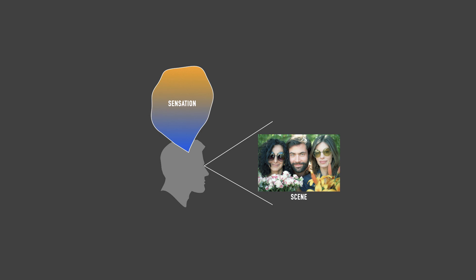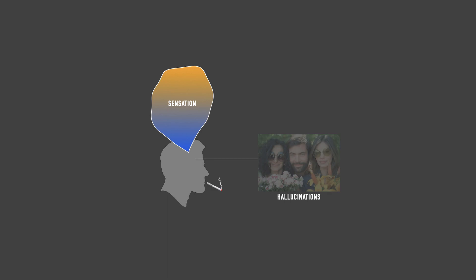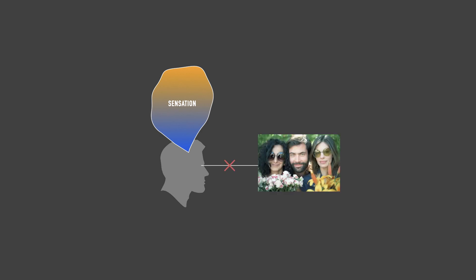Moreover, one is able to experience colour sensations with one's eyes completely closed — for example, in a dream, with hallucinations, due to painful sensations, mental associations, etc. That is, the connection between what we see and how we perceive it is rather fragile. Of course, there is that connection, but not at all as unambiguous and reliable as it is commonly believed.